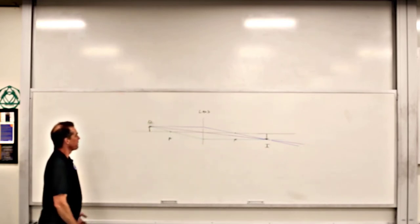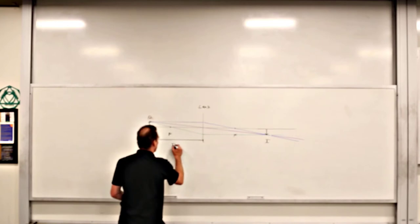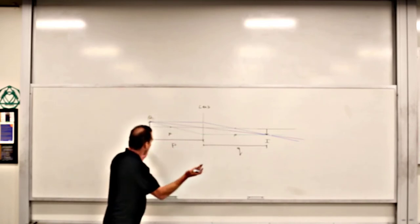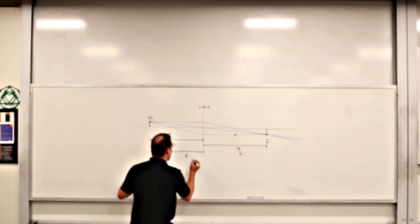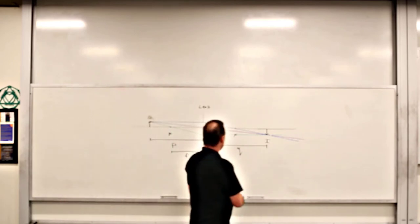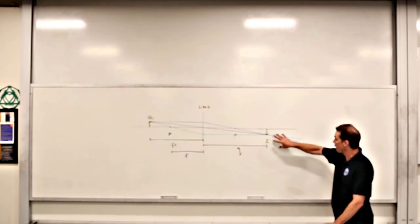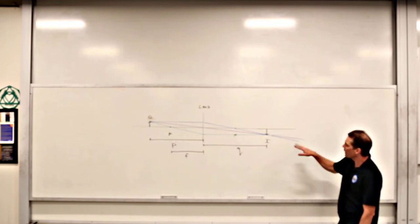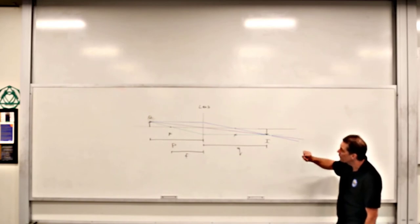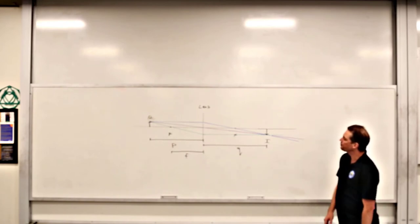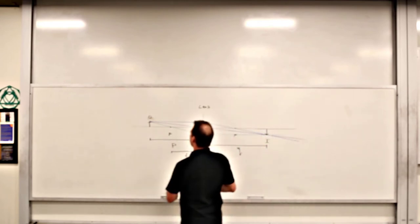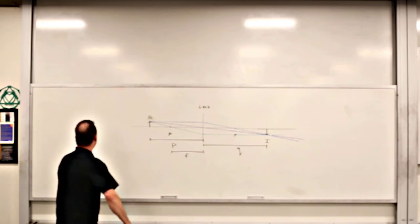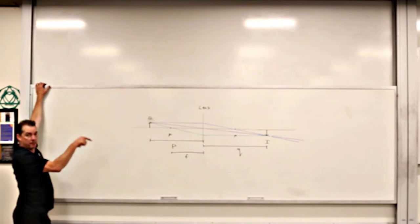We got ourselves P, Q, and F marked. We can see from this that the image is inverted. It is a real image because we have a physical intersection of light rays after the refraction has taken place. The magnification is a little bit difficult to tell from the diagram — it looks like it might be a little bit bigger, but we'd have to calculate that out.